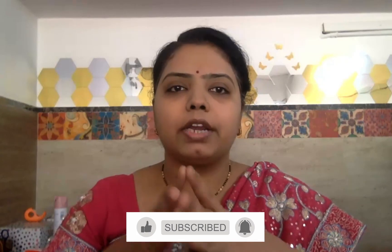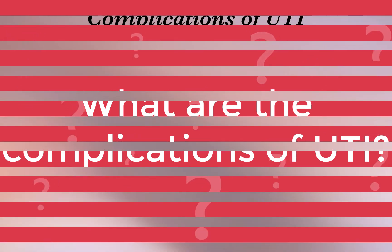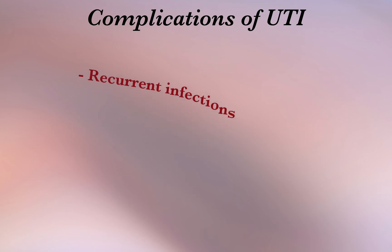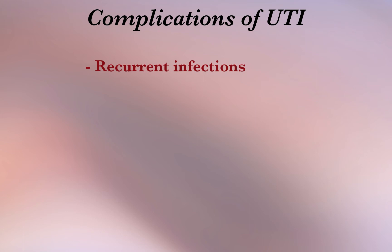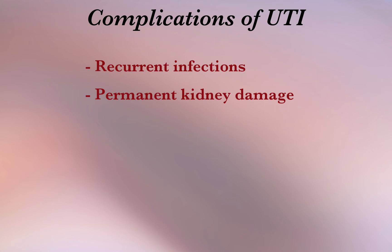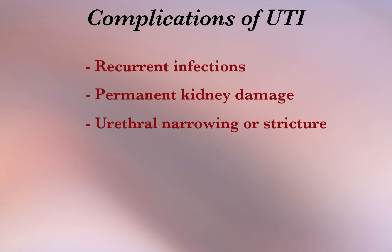When treated promptly and properly, lower urinary tract infections rarely lead to complications. But when left untreated, a urinary tract infection can have serious consequences. Complications of UTI may include recurrent infections, especially in women who experience two or more UTIs in a six-month period or four or more within a year. Another complication is permanent kidney damage from an acute or chronic kidney infection due to an untreated UTI. Next is urethral narrowing or stricture in men from recurrent urethritis. Another important complication is sepsis — a potentially life-threatening complication, especially if the infection works its way up the urinary tract to the kidneys.